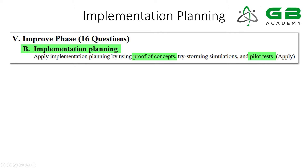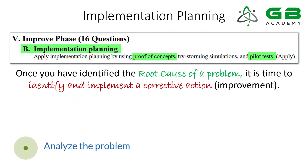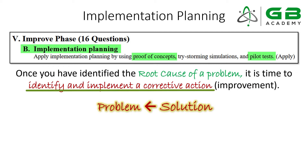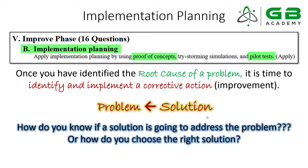Before we get into it, I want to give you some context. We're in the Improve phase, meaning we're following the DMAIC process — we've defined, measured, and analyzed our problem, and now that we understand the root cause, it's time to identify and implement some sort of improvement. You could call it a corrective action, a kaizen, whatever you want — but it's time to find the right solution. This can be one of the hardest things a Green Belt can do because there can often be multiple solutions.